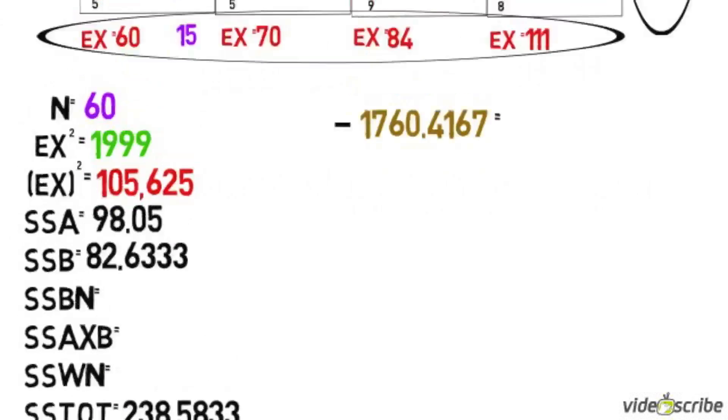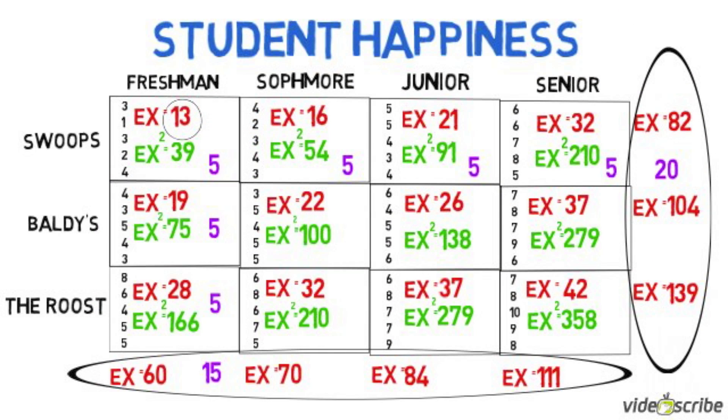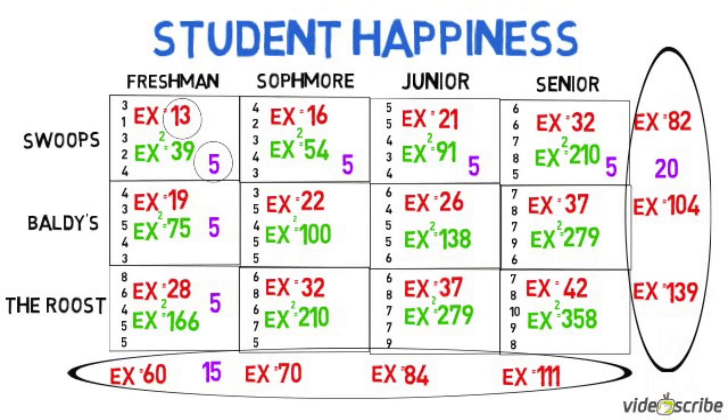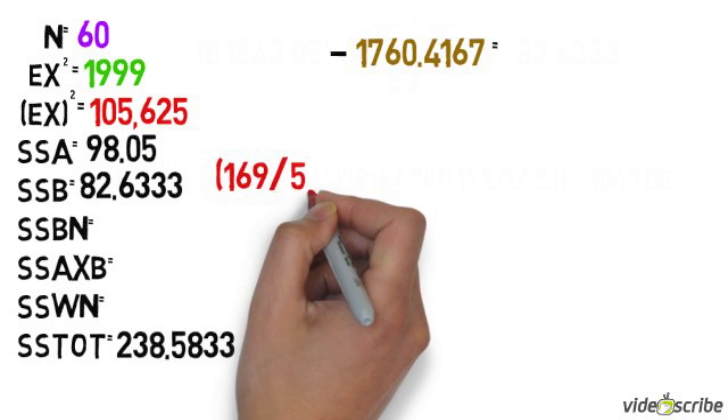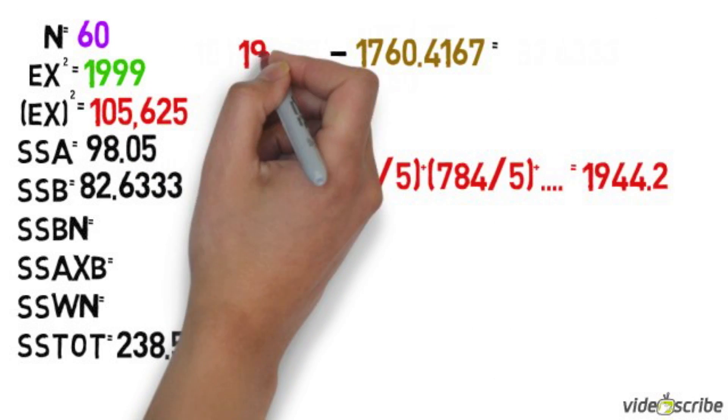Next, we're going to look at the sum of squares for the between groups. We're going to take the sum of the squares in each cell, square it, then divide it by the n of the scores in each cell, which is 5. We're going to add the numbers from all the cells together, and then subtract the squared sum of x divided by n.